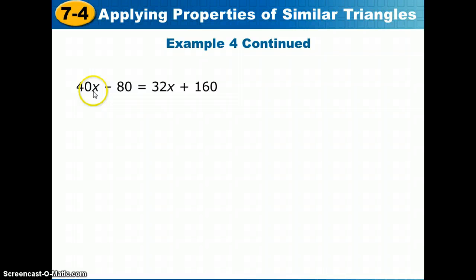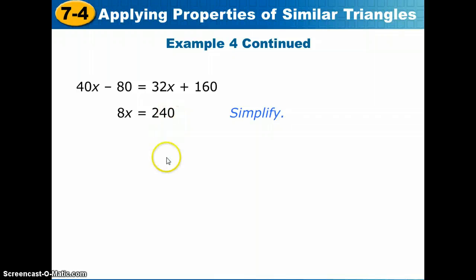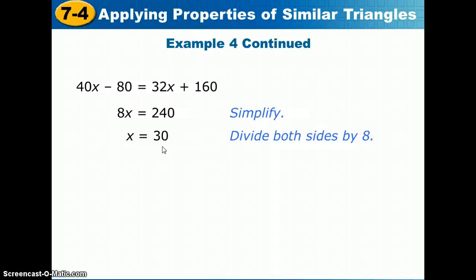Alright, so we have this equation, 40x minus 80 equals 32x plus 160. Now all we have to do is solve for x. I'll quickly guide you through how we would do that. We're going to subtract 32x from both sides, and add 80 to both sides. That gives us 8x equals 240. Now all we do is divide both sides by 8, and x equals 30.